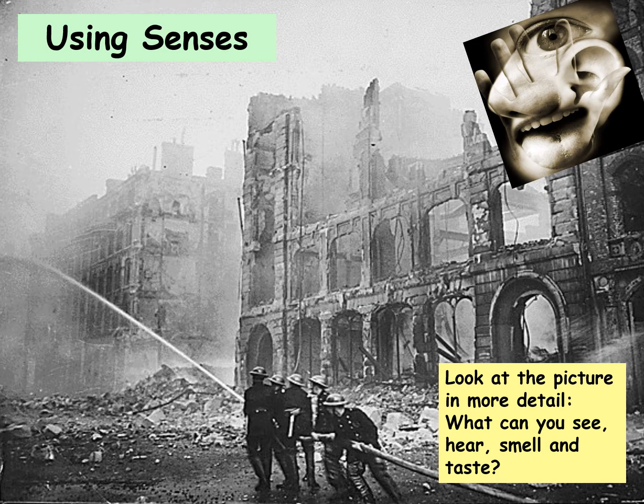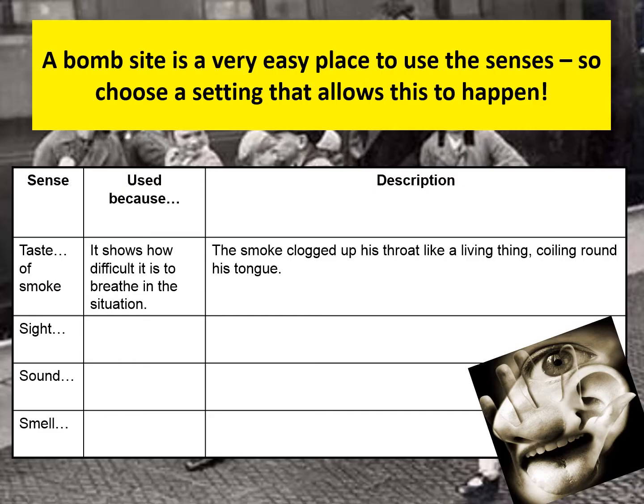One of the things emphasised earlier was the use of senses. Look at the picture in the background — a bomb site. What can you see, smell and taste if you were there with that city around you? What could you hear — the firemen, the sirens, the flames? A bomb site is a very easy place to use the senses, so choose a setting that allows you to talk about all five senses.